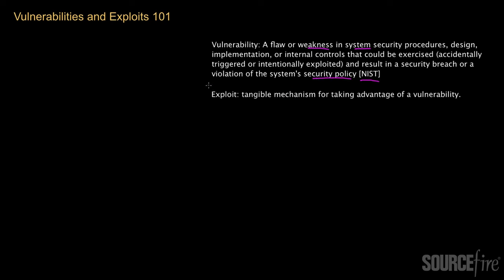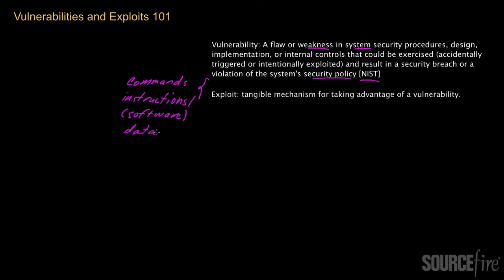Now, an exploit — and I've put here a more informal definition. An exploit is basically a tangible mechanism for taking advantage of a vulnerability. That tangible mechanism could include things like commands to the system, computer instructions, and those instructions can in fact be packaged as part of a software application. An exploit might also involve some type of appropriately crafted chunk of data that's sent to the system in question, or obviously some appropriate combination of all these things.